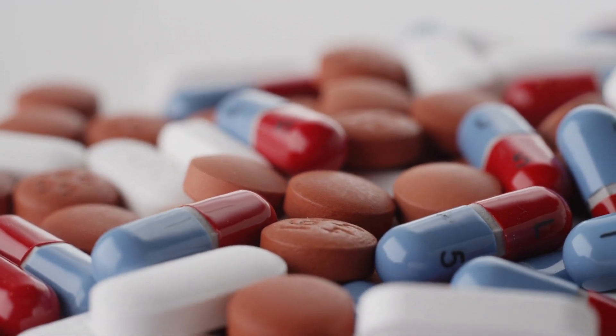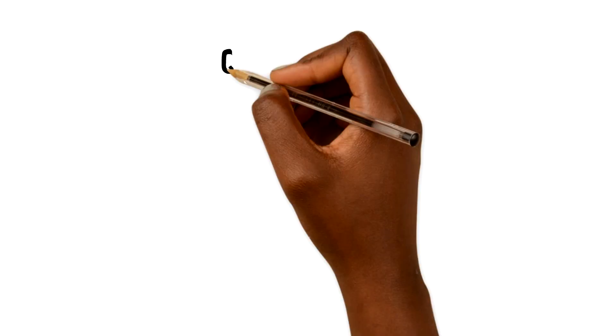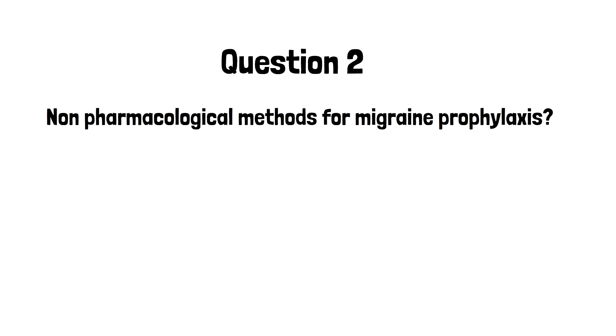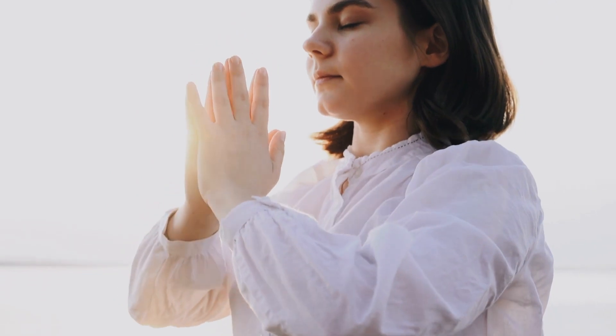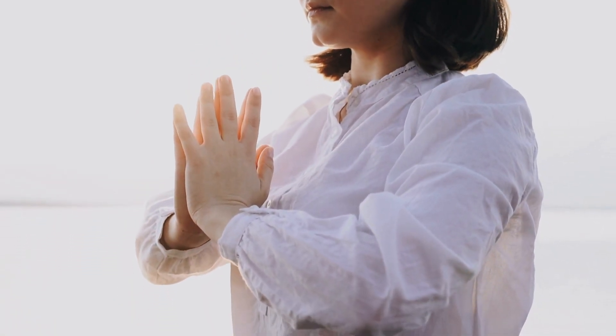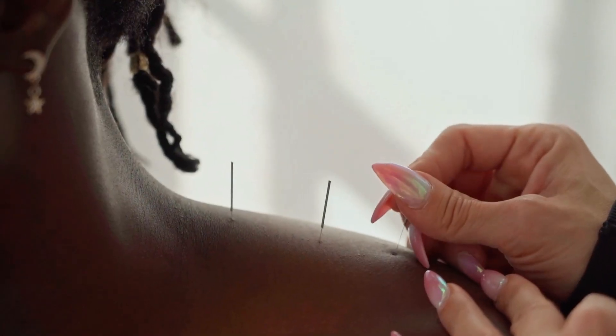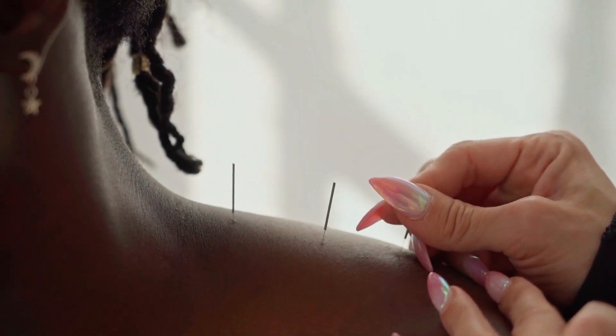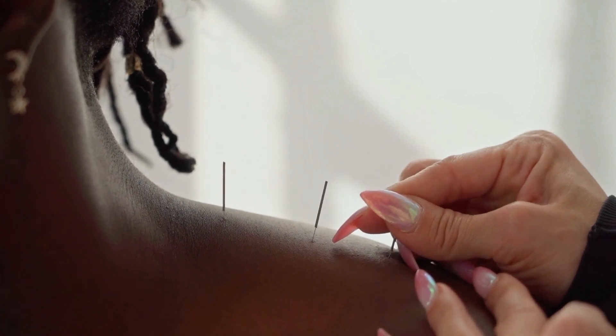After discussing with Chloe some options for migraine prophylaxis — such as propranolol, topiramate, and amitriptyline — she's not keen on starting more medications as she already has several. Question two: what non-pharmacological methods for migraine prophylaxis can you suggest in this case? Behavioral interventions such as relaxation techniques, mindfulness, or meditation can be helpful, including CBT. We could also consider acupuncture, which includes up to 10 sessions over a five-to-eight week period.